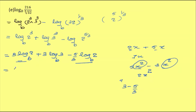Equal to 4 by 3 log 2 base b plus 3 log 3 base b. That's it.